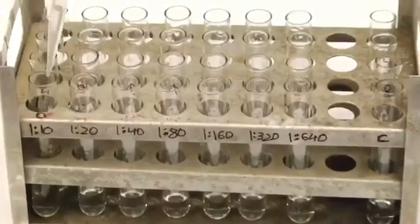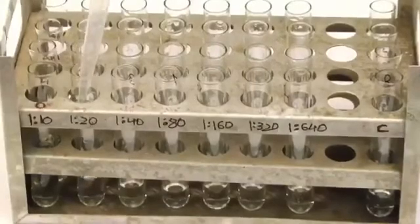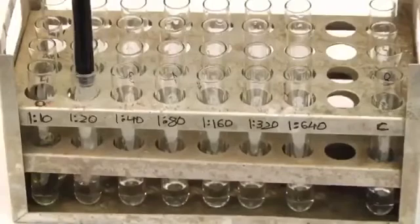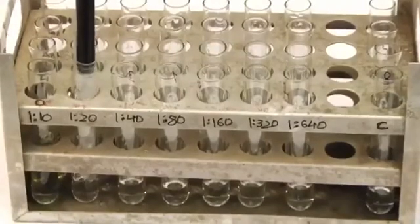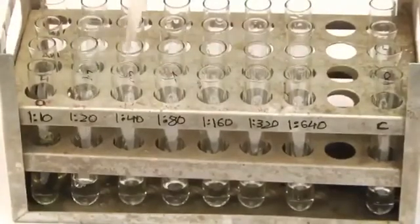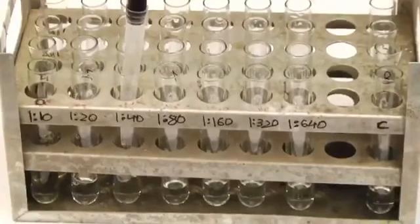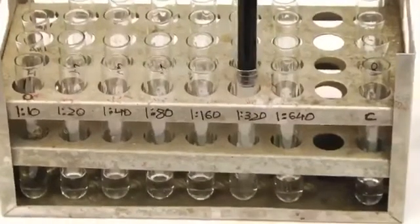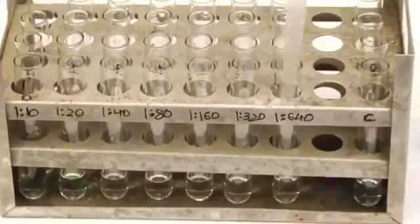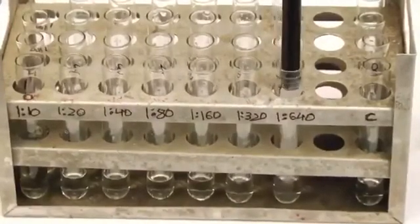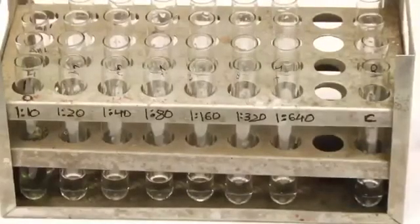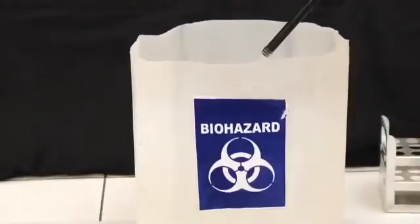Transfer 1 ml of the diluted serum sample from tube number 1 to tube number 2 and mix well. Transfer 1 ml of the dilute serum sample from tube number 2 to tube number 3 and mix well. Continue the serial dilution till tube number 7 in each set. Discard 1 ml of the diluted serum from tube number 7 of each set.